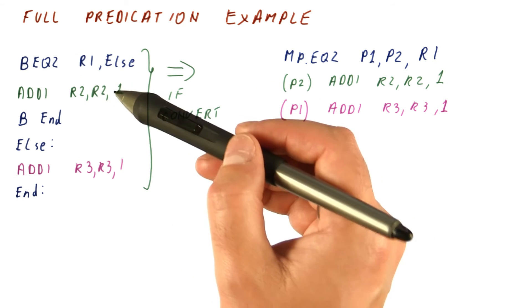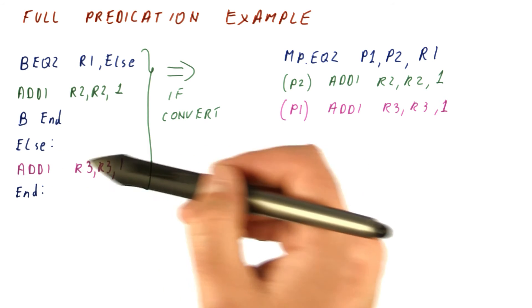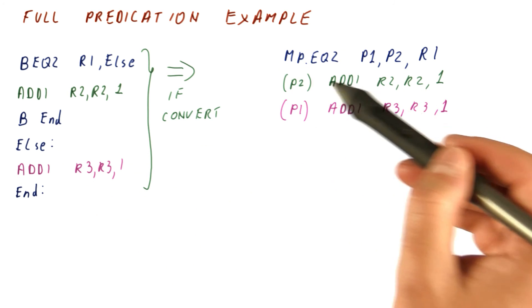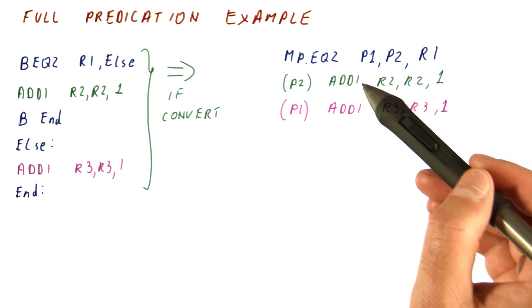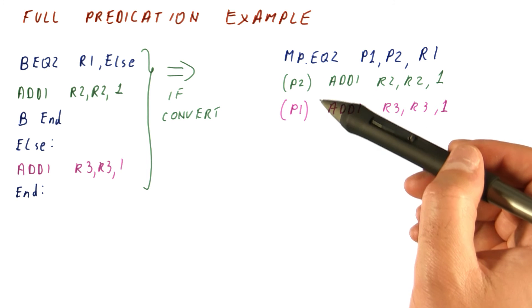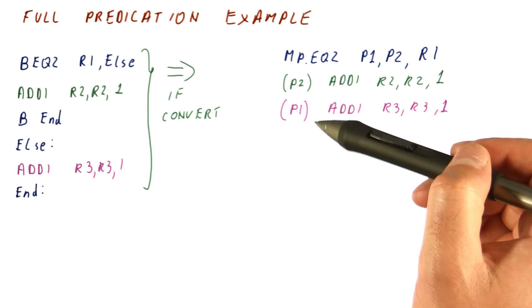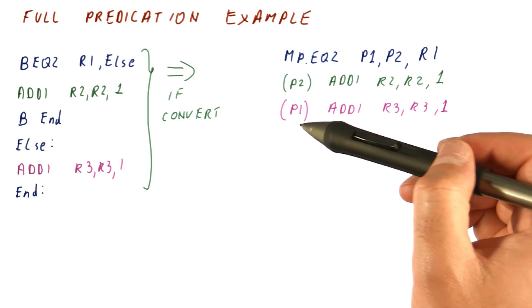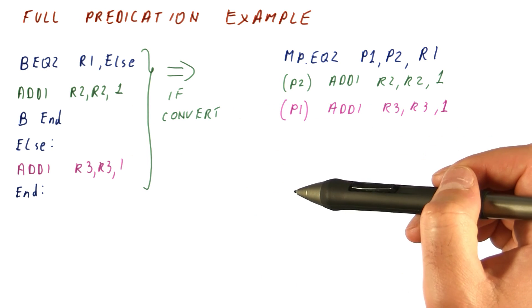With branches we needed to have the branch and then the code from either path. Here we have the condition set followed by the code from both paths. So the only overhead that we have in terms of executing more instructions comes from doing the work of both paths instead of just one. But there are no additional instructions to select between the results.